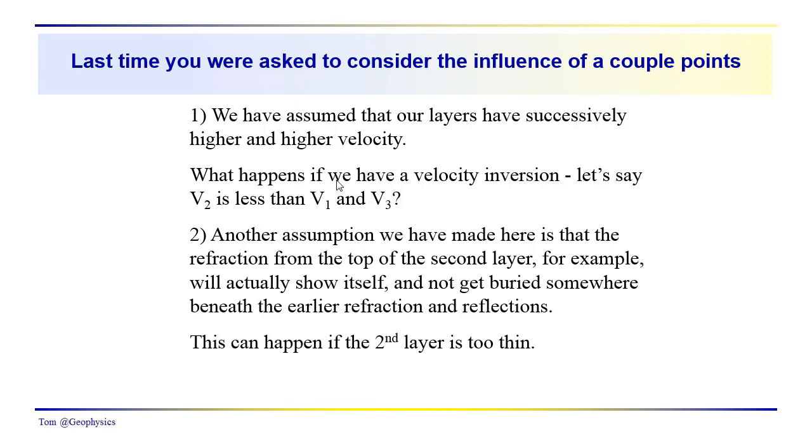But the question that we're considering here is what happens if we have a velocity inversion? And that's the case where V2, we have a layer sandwiched in there that we didn't see that has a velocity V2 which is less than V1 and V3. So that's one assumption that we're making, and one problem that we need to consider.